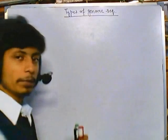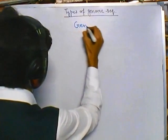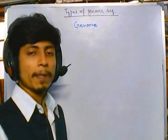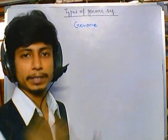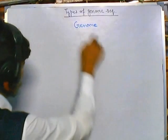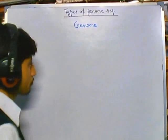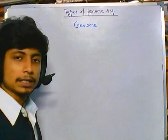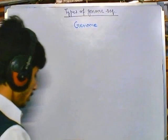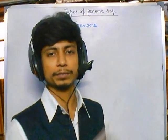Genome sequencing — genome means the total gene content of an organism. We have the genome and we need to sequence it, meaning we need to understand each nucleotide placed one after another — the exact DNA sequence. We can sequence a genome in two different ways: one is normal back-to-back sequencing, and another is shotgun sequencing.